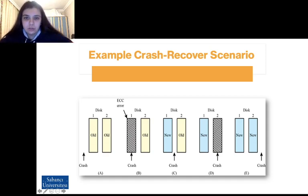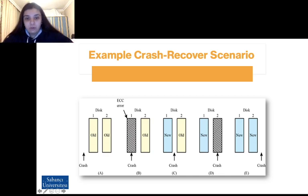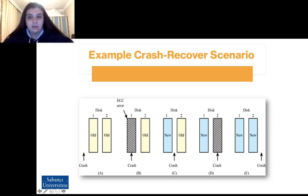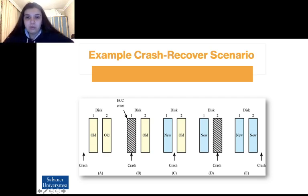If the CPU crashes after the drive 2 block has been copied to drive 1, then the situation is the same as in case E. Now, consider that a CPU crash occurs during recovery as in case C. Before the block has been copied from drive 1 to drive 2, the situation is the same as in case D — the method detects an ECC error in drive 2 and copies the block from drive 1 to drive 2. If the CPU crash occurs after the block has been copied from drive 2, then the situation is the same as in case E.